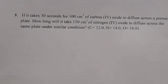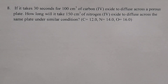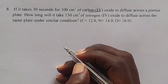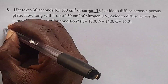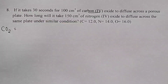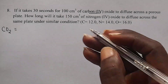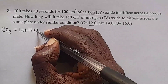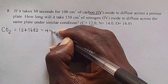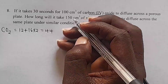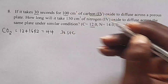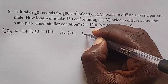So the first way — we organize our gases. We are dealing with carbon dioxide, written as CO₂. The molecular mass of CO₂: carbon is 12, oxygen is 16 but you have 2 oxygens, so this gives 44. The time for carbon dioxide is 30 seconds, and the volume is 100 cm³.